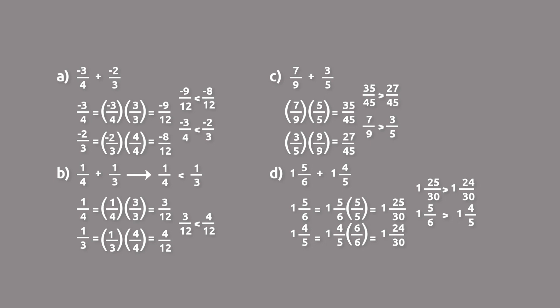To compare rational numbers in fraction or mixed number form, we simply put both fractions over a common denominator and then compare them by looking at just the numerators.